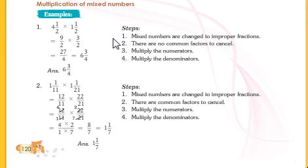The first step is mixed numbers are changed to improper fractions. The mixed numbers, first we will change them, convert them to improper fractions. Then, there are no common factors to cancel. When we convert to improper fraction, if there are any common factors we can cancel them. Then multiply the numerators. We will multiply the numerators together. Then fourth step is multiply the denominators. After that we will multiply the denominators.